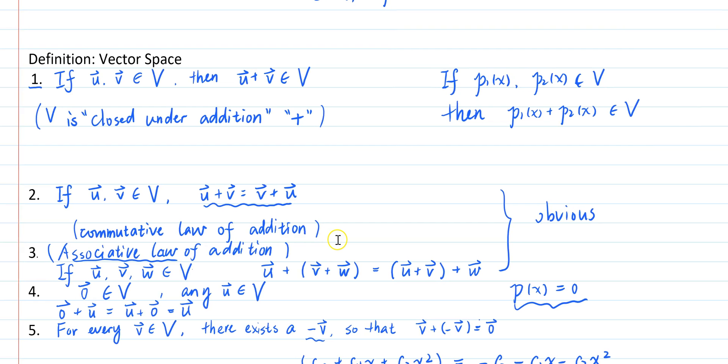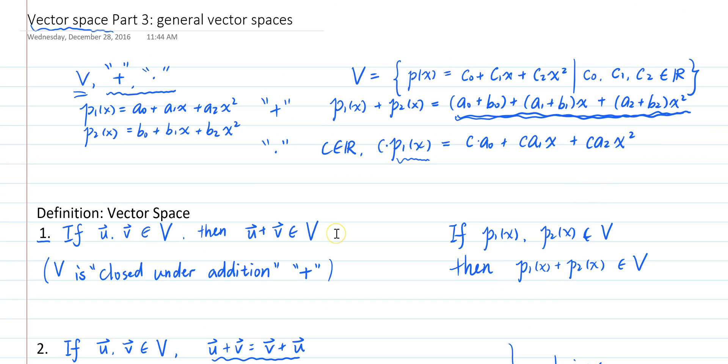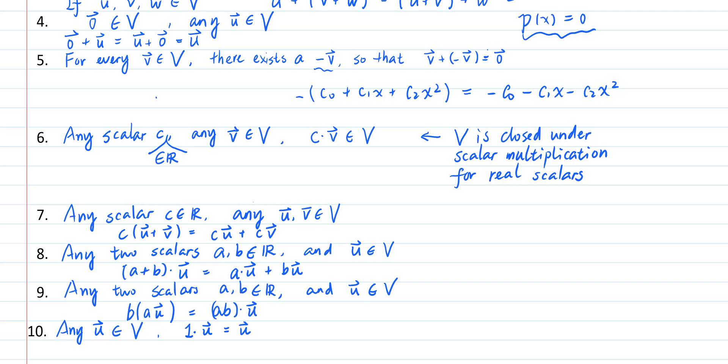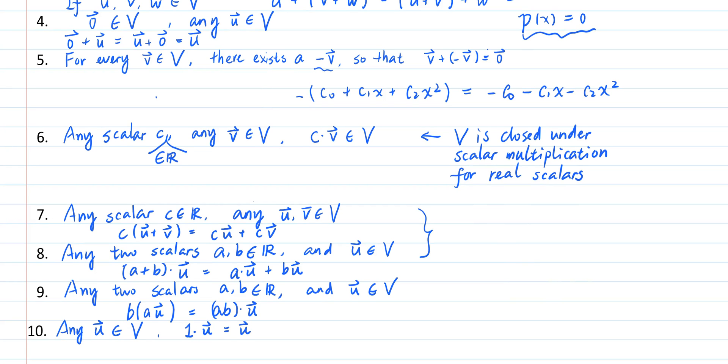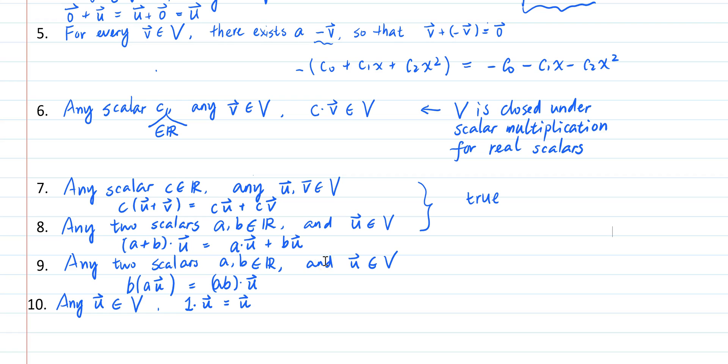For the sixth property, if we take any polynomial of degree 2 or less, then as evident by this expression, any scalar multiple of this polynomial is still a polynomial of degree 2 or less and therefore still belongs in the set V. Properties 7 and 8 are true because the distributive law of multiplication of real numbers carry over here.